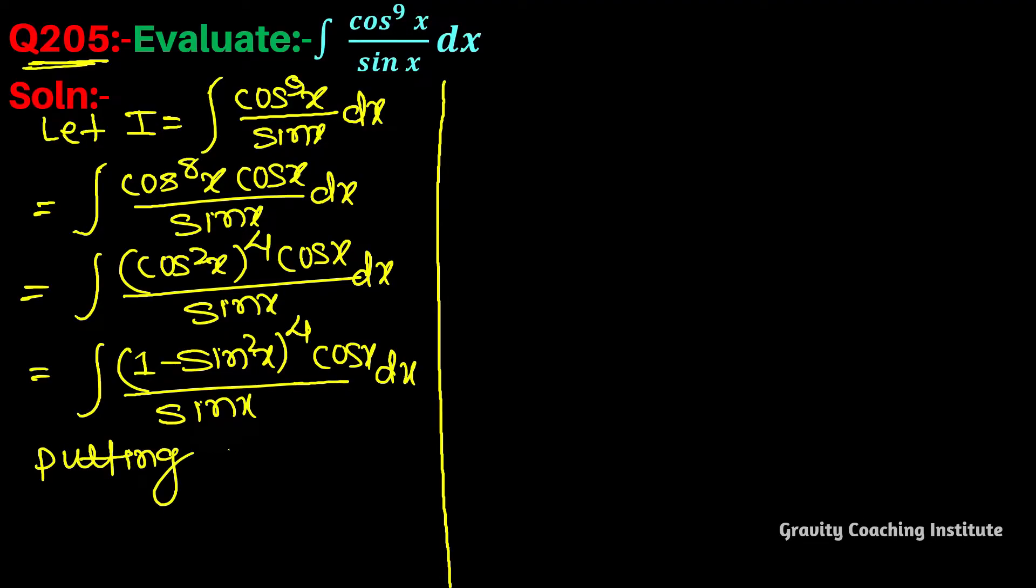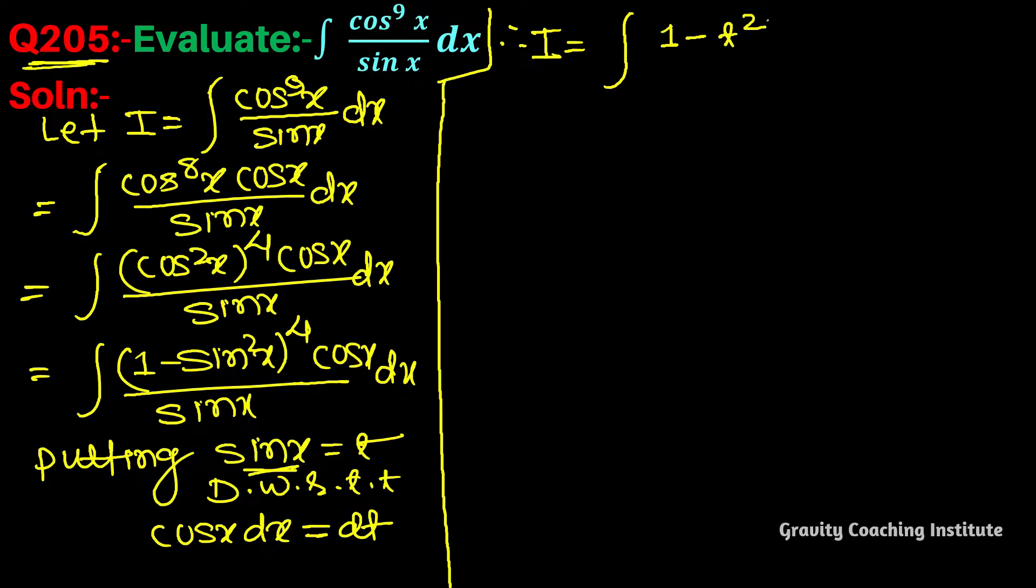Now putting sin x equal to t, and differentiating with respect to t, we get cos x dx equal to dt. Therefore I equal to integration 1 minus t square to the power 4 upon t, or cos x dx ke jagah pe dt.